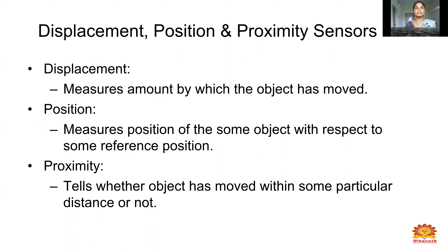Next, the topic covers displacement sensor, position sensor, and proximity sensor. Displacement means the amount by which an object has moved in any one direction. Position means the position of some object with respect to some reference position. Proximity detects whether an object has moved within some particular distance or not. Proximity sensors are always used in cars.